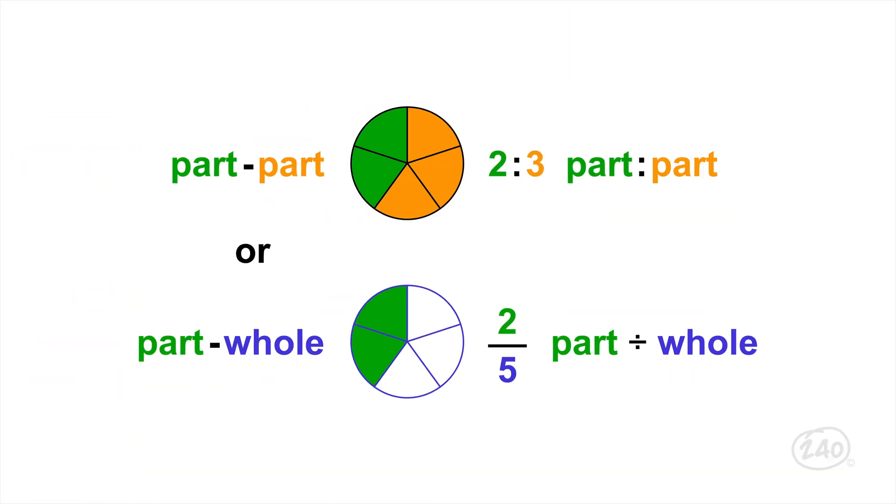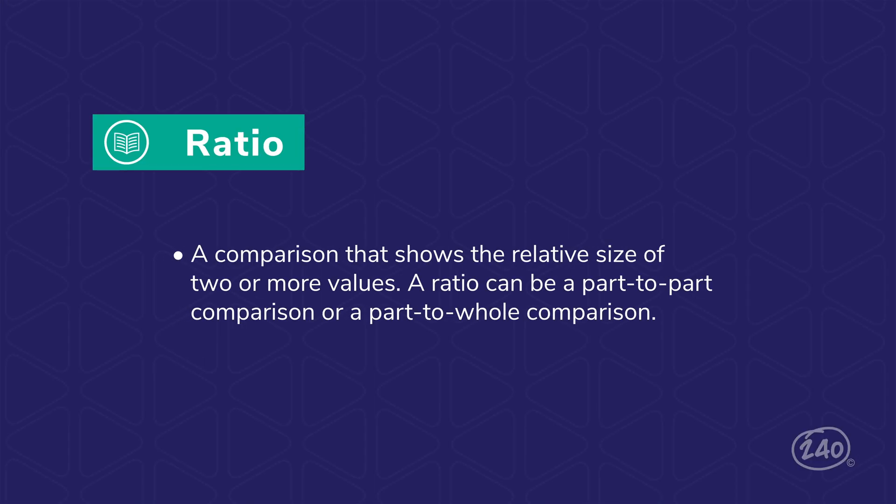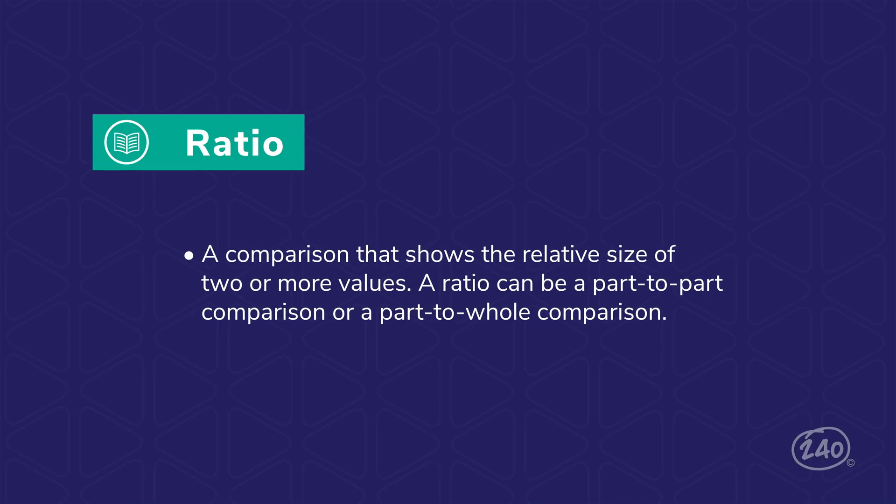Any relationship can be expressed using part-to-part or part-to-whole comparisons. This can also be defined as a ratio. In other words, a ratio is a comparison that shows the relative size of two or more values. A ratio can be a part-to-part comparison or a part-to-whole comparison.